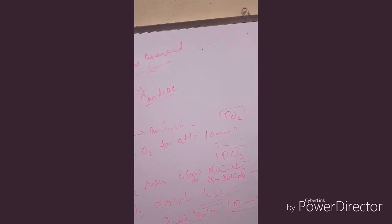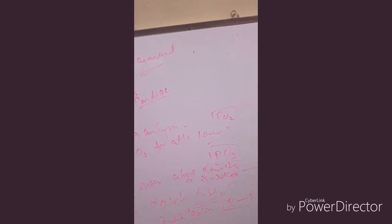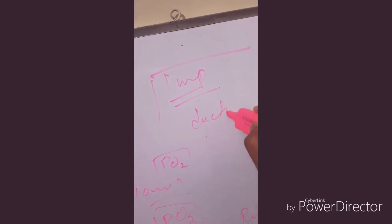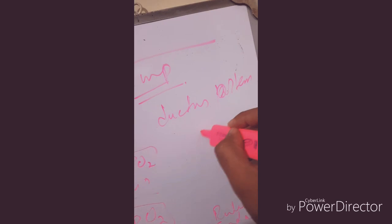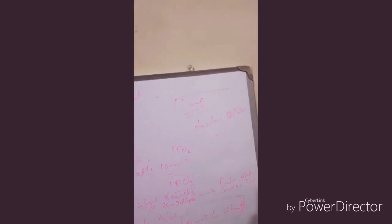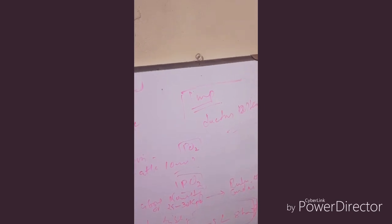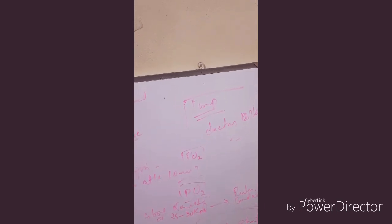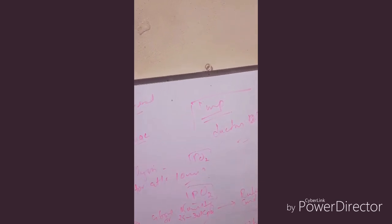One important thing to note is while performing this test, you should have emergency measures ready. You all know ductus arteriosus, our friend. Now, ductus arteriosus closes by oxygenation. When lungs are oxygenated, it closes. So if the baby has duct dependent circulation, like a baby has pulmonary stenosis...